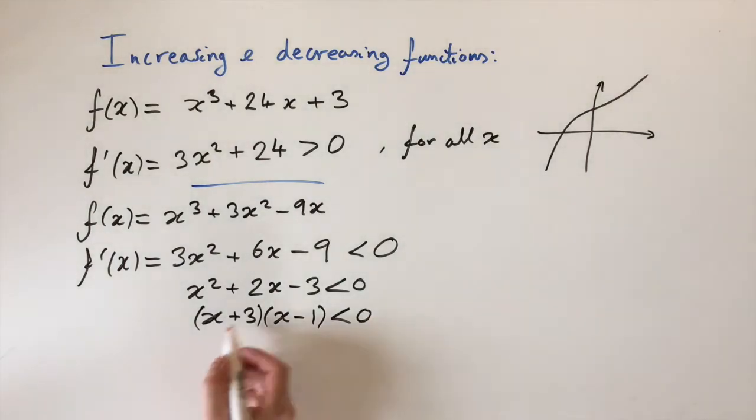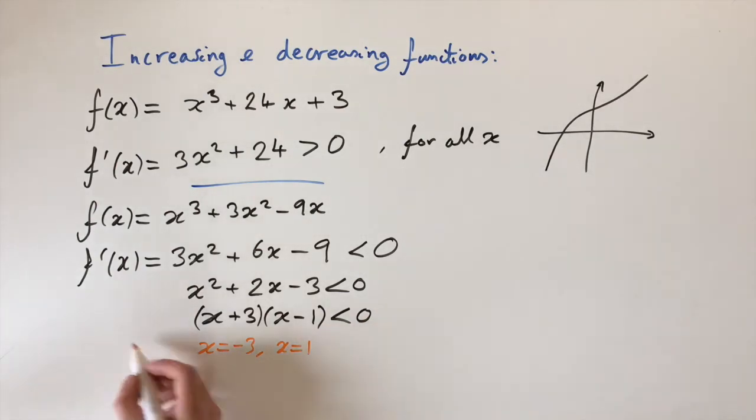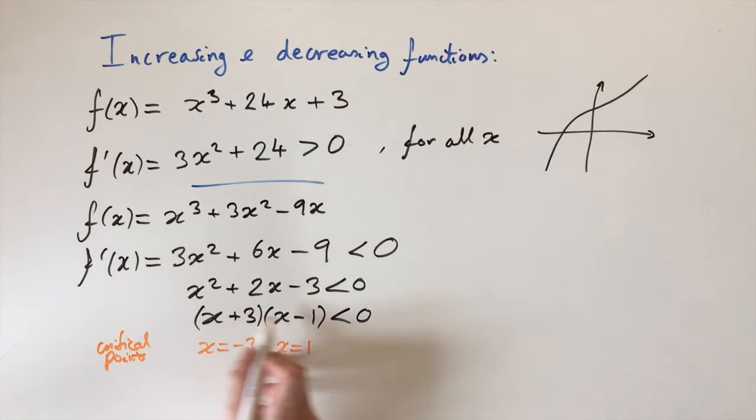Now I'm just going to write underneath here, when these brackets are 0. This is going to be useful. So this is when x equals -3, and when x equals 1. Just setting these brackets equal to 0. Now this doesn't give us the solutions obviously, but it gives us the critical points. So these are sometimes called critical points. And this will help us find when this quadratic is less than 0.